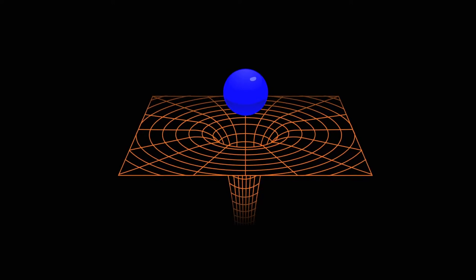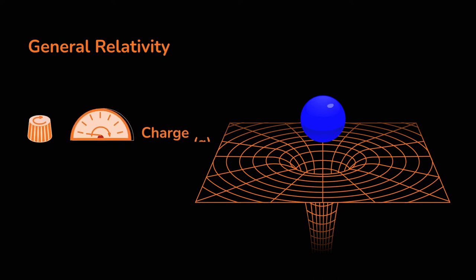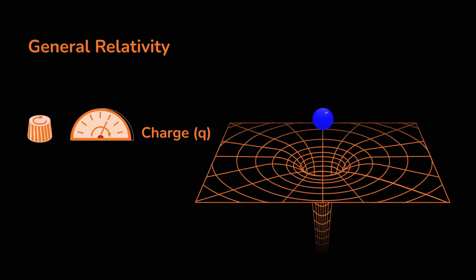Black holes are a striking prediction of Einstein's theory of general relativity. They are characterized by spherical event horizons and highly curved spacetimes.